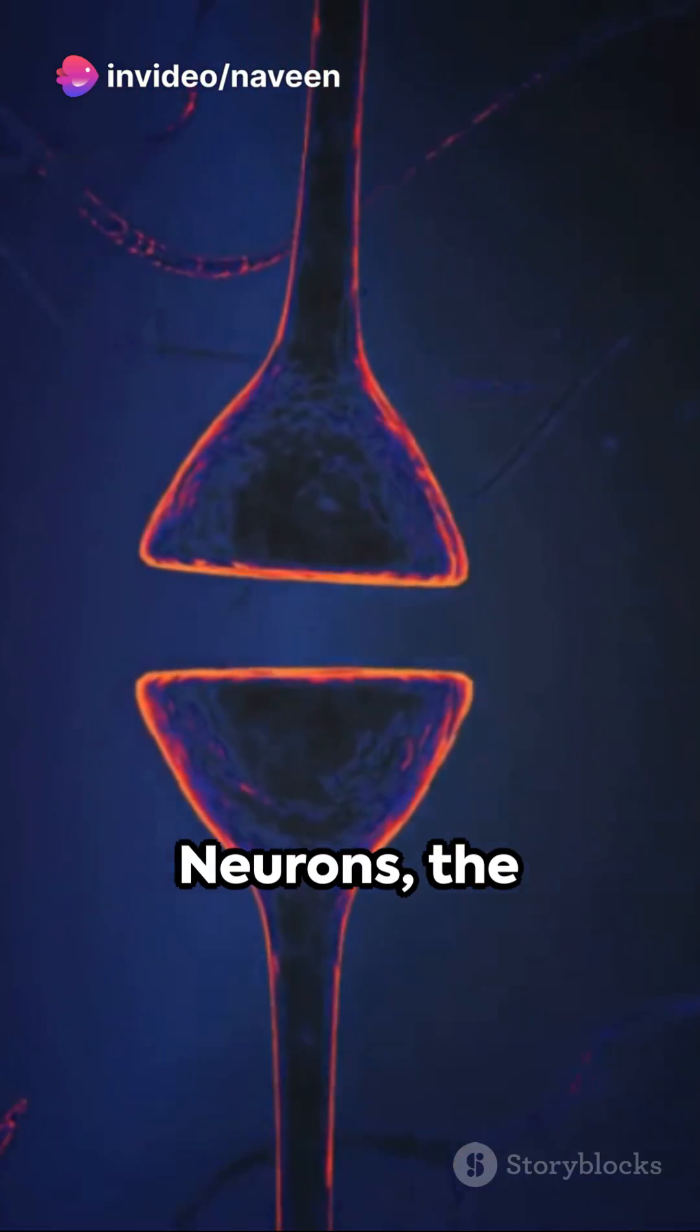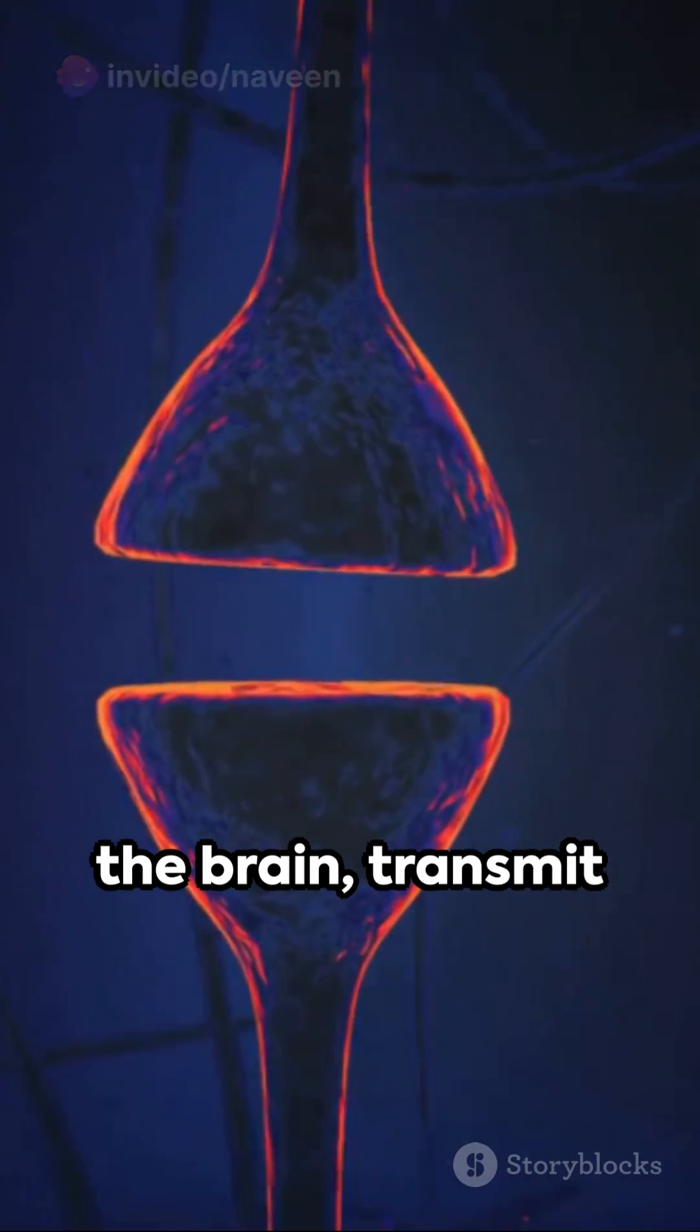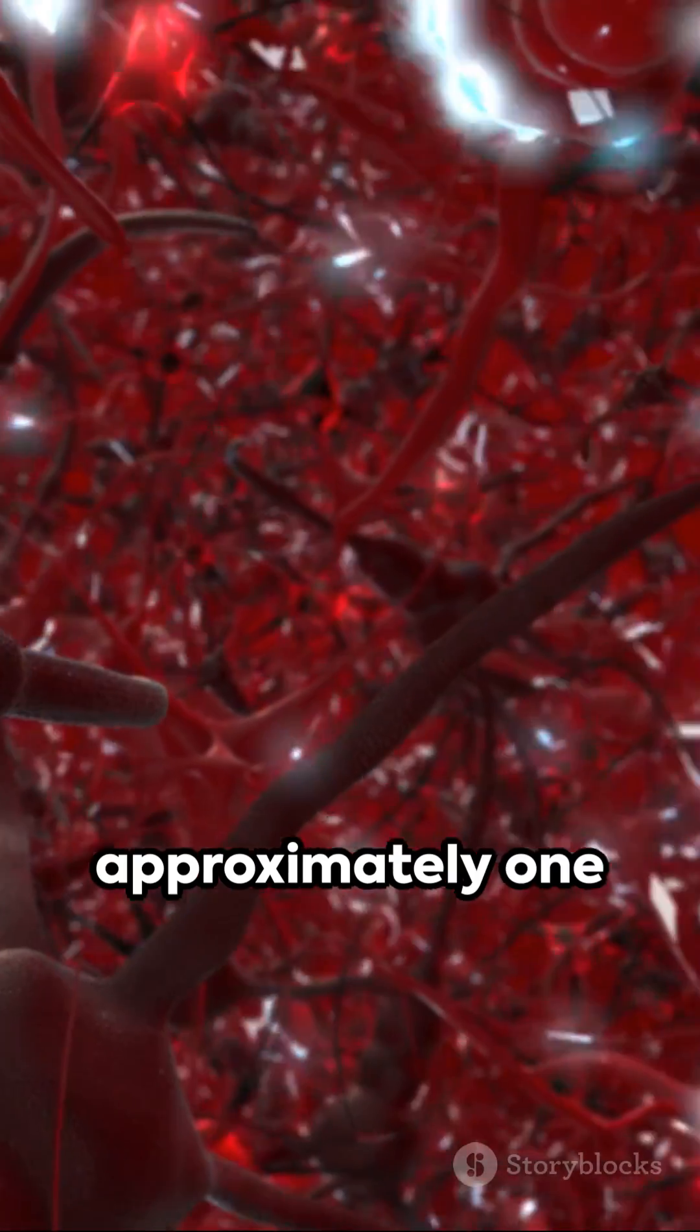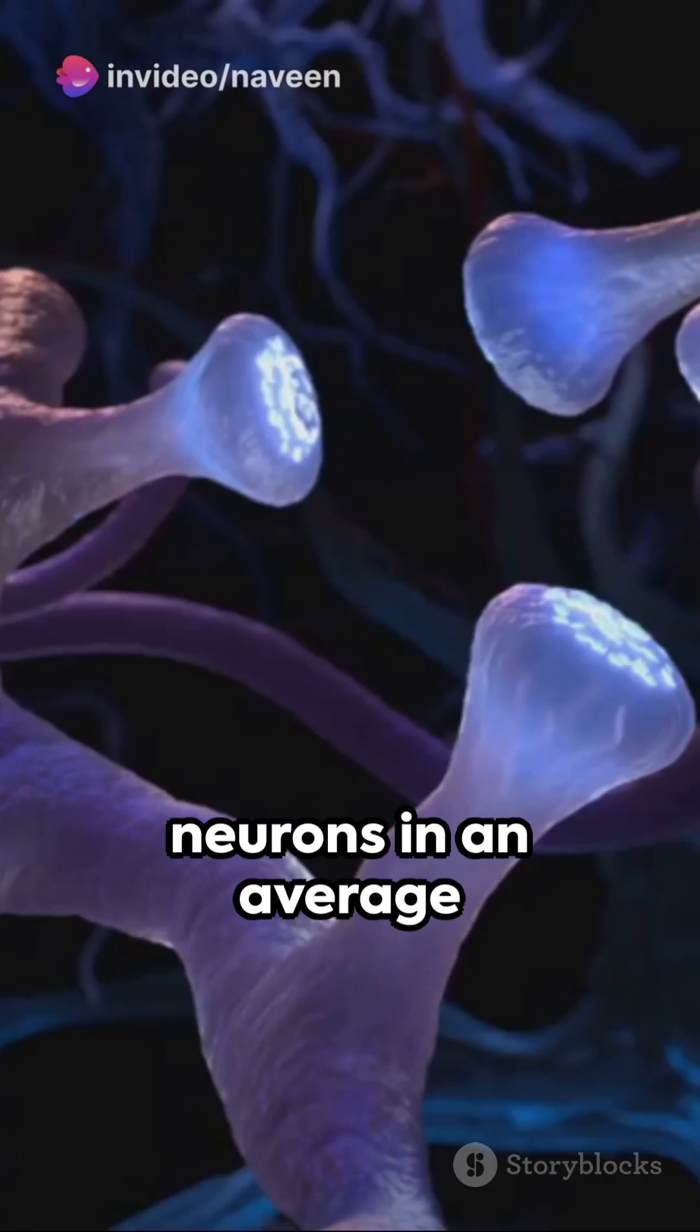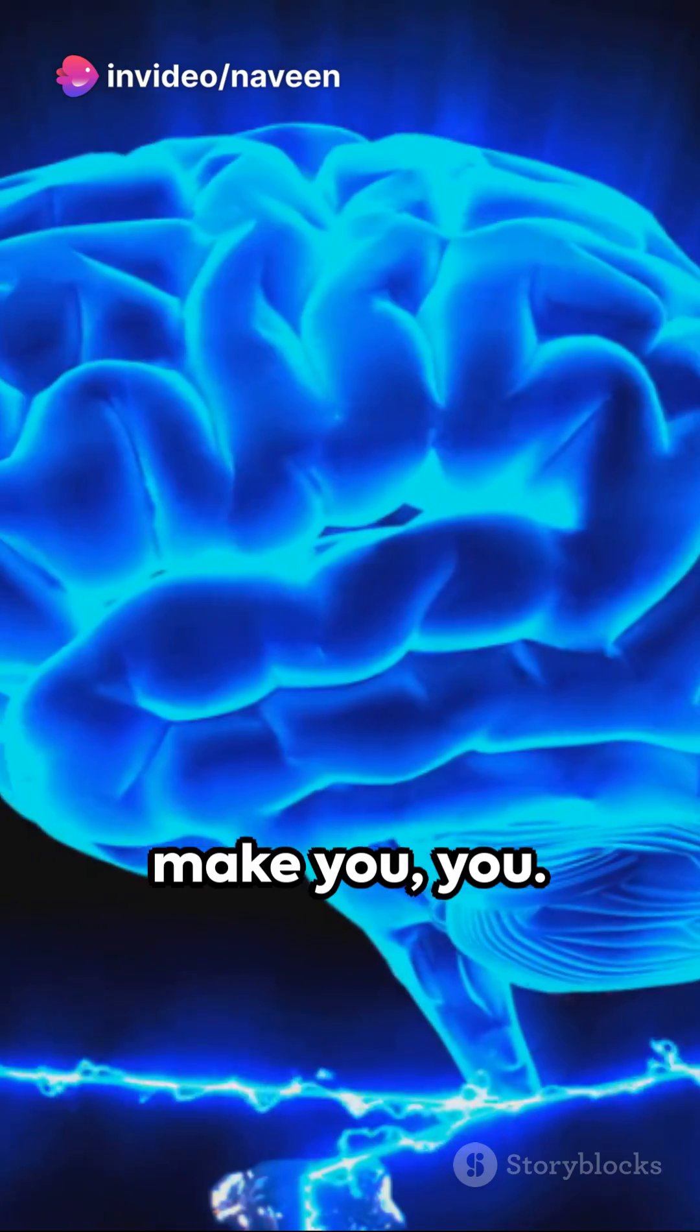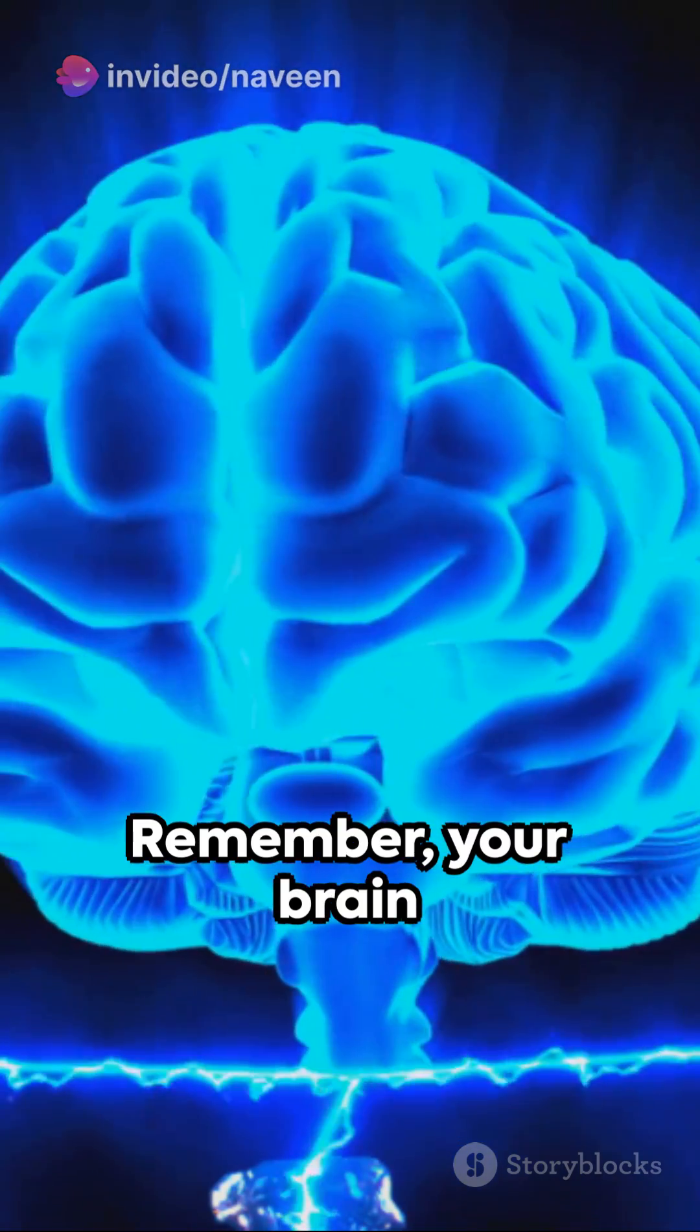Neurons, the building blocks of the brain, transmit information through electrical and chemical signals. There are approximately 100 billion neurons in an average human brain, all working in harmony to make you, you.